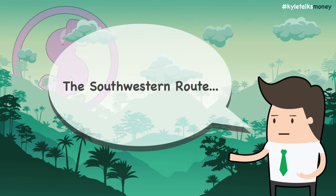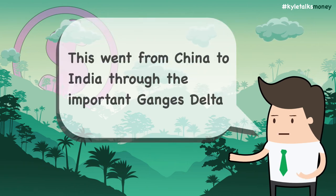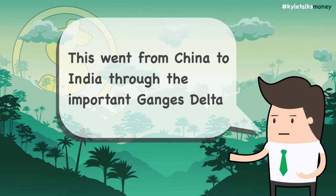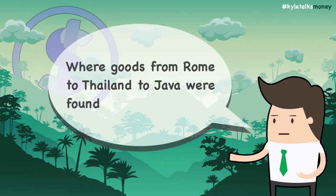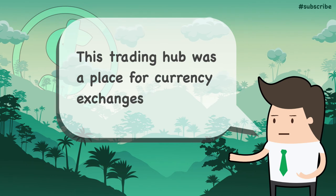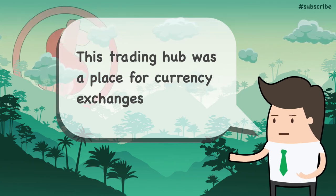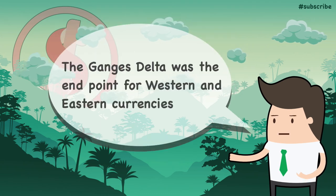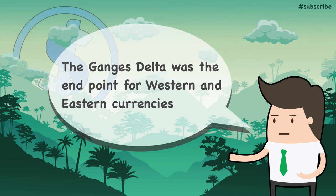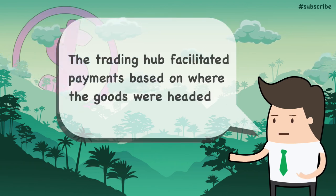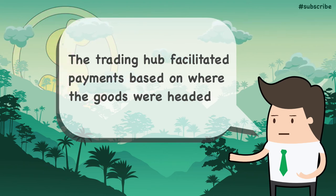The Southwestern Route went from China to India through the Ganges Delta. This delta region was an important trading hub, and archaeological excavations have found an astonishing array of goods from various parts of the world here, such as ancient Roman beads and gemstones from Thailand and Java. The region's role as a trading hub also meant that the area served as a currency exchange. Most Western currencies never made it further east than this, and most Eastern and Chinese coins never made it further west. Traders in the Ganges Delta primarily used Eastern currencies when trading with Eastern merchants and Western currencies when trading with Western merchants.